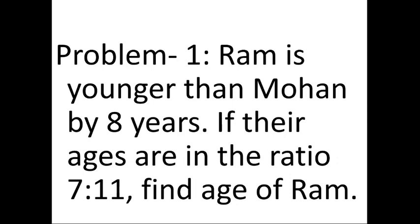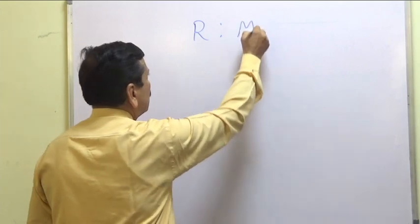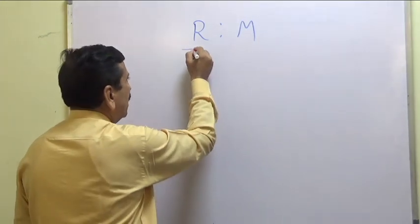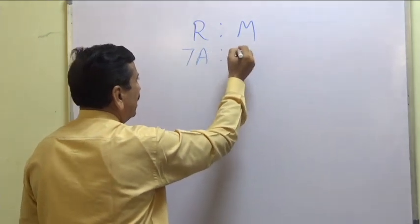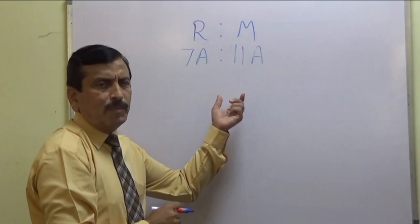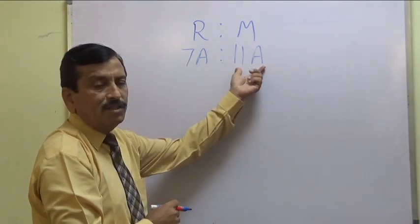Ram is younger than Mohan by 8 years. If their ages are in the ratio 7 is to 11, find the age of Ram. Since their ages are in ratio 7 to 11, let us consider the age of Ram as 7a, where a is some constant of proportionality. So 7a is the age of Ram and 11a is the age of Mohan. This is equation number 1.